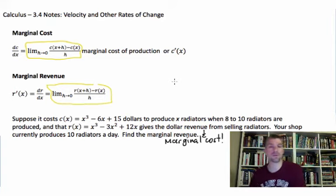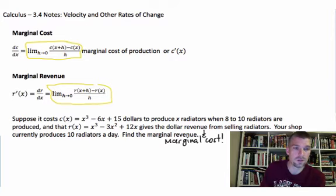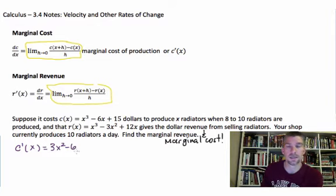So we are currently producing 10 radiators a day. Find the marginal revenue and find the marginal cost. We'll do marginal cost first. Marginal cost just simply means to find the derivative of the cost function. So c'(x) is going to be 3x² - 6. Now, what are we working with? We're working with 10 radiators.